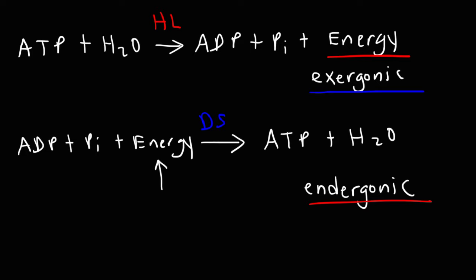So ATP is the energy currency of the cell. It's very useful for getting things done and accomplishing many cellular processes. So that's it for this video. Thanks for watching and don't forget to subscribe.